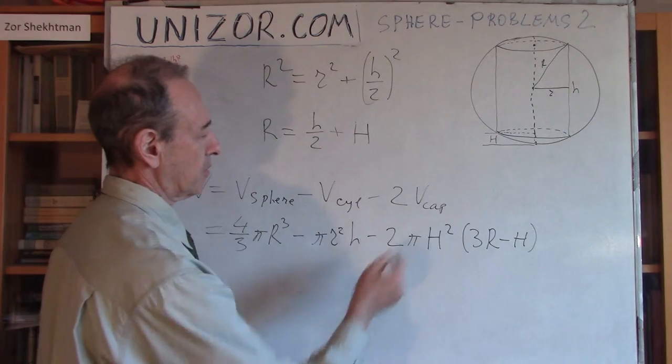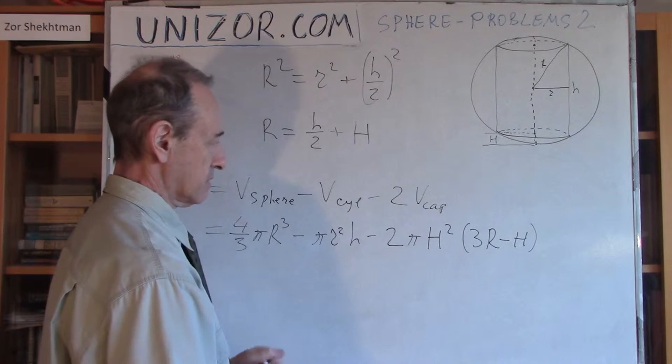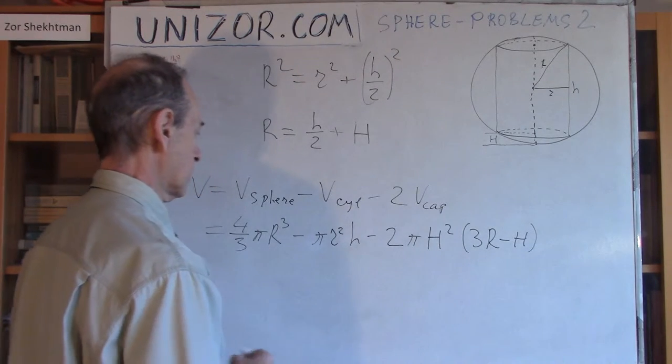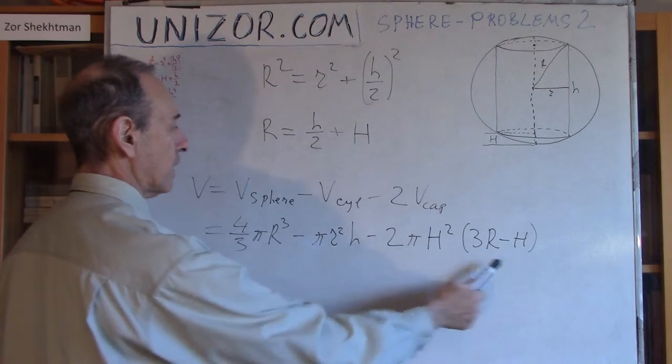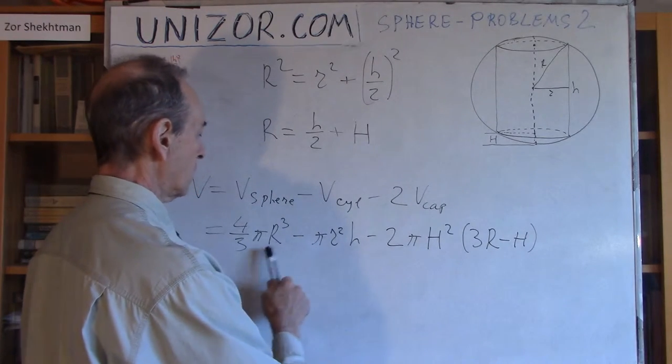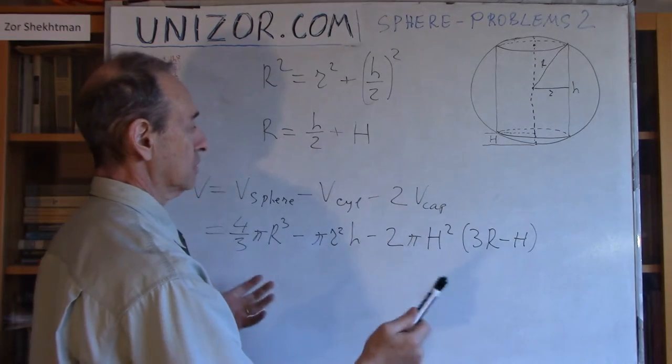pi H square 3R minus H. That was in one of the previous lectures, when I was talking about caps. Somehow, I remember this formula. Quite frankly, it's not an easy thing to remember, but I think that's what it is. So, we have all these dependencies on R, capital R, lowercase r, and capital H, which we don't really know. However,